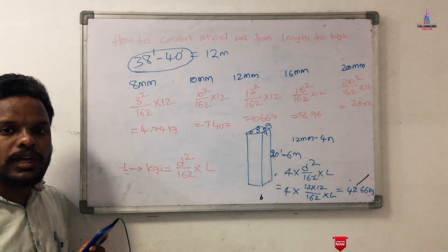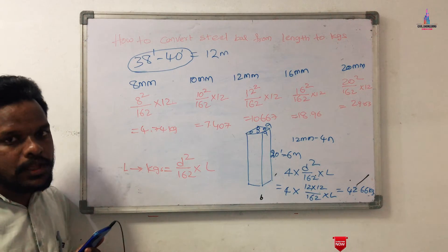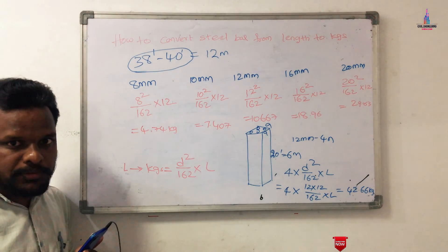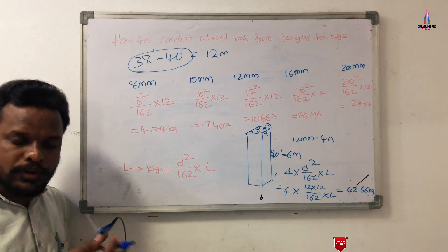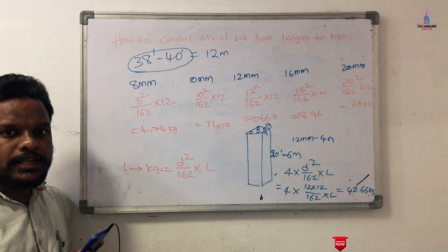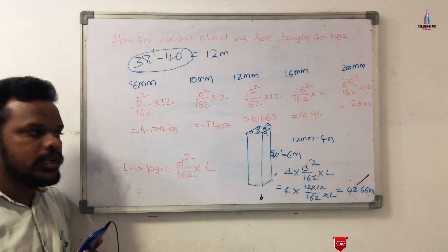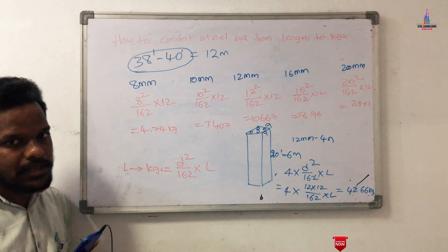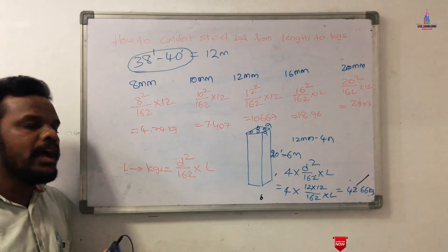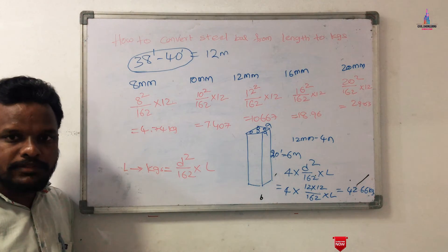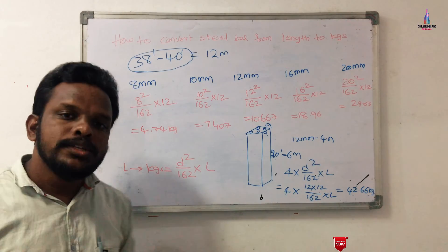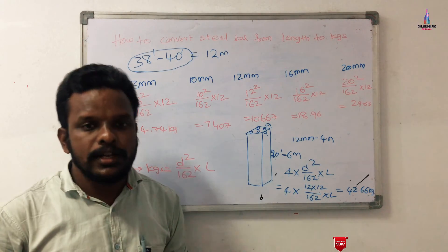This is the complete process of how to convert a bar from length to cages. This is an important concept when working with foundation sections, column sections, or beam sections — it is important to calculate both the length of the bar and the weight of the bar. If you have any queries about this video, please text your questions in the comment box below and I will answer them.